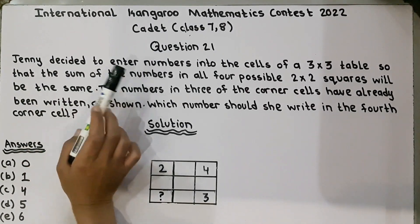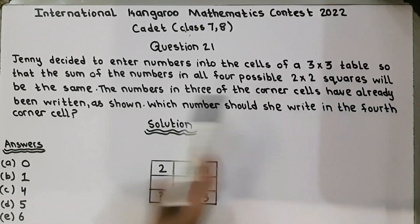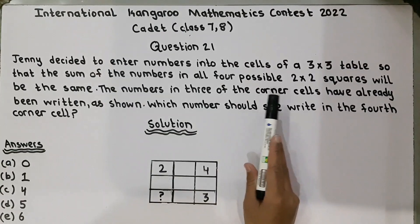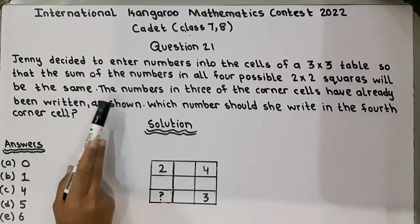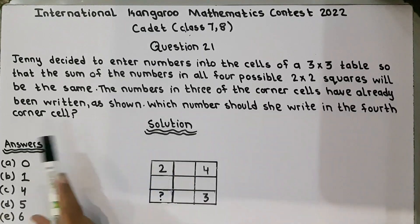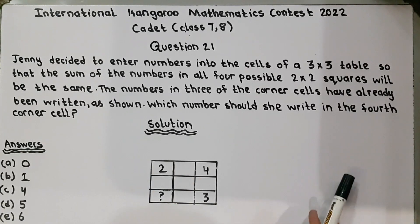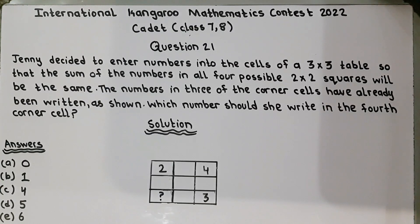Jenny decided to enter numbers into the cells of a 3x3 table so that the sum of the numbers in all 4 possible 2x2 squares will be the same. The numbers in 3 of the corner cells have already been written as shown. We have to find the fourth corner number.